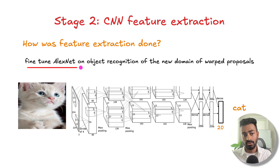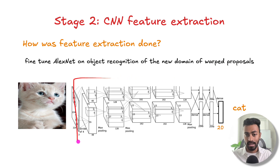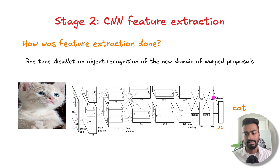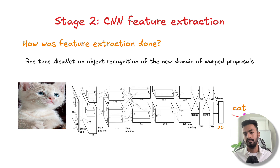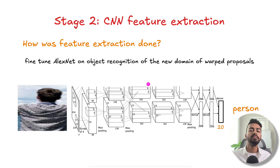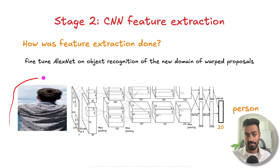Next, we fine-tune AlexNet on object recognition in the new domain of warped proposals. We take the pre-trained AlexNet architecture and replace the output layer — originally 1000-dimensional — with, say, a 20-dimensional layer representing the object categories we want to detect. These new weights are randomly initialized. We then pass our new dataset through, training with backpropagation to learn these weights and fine-tune the rest of the network. Once done, we have a network fine-tuned to take warped region proposals.